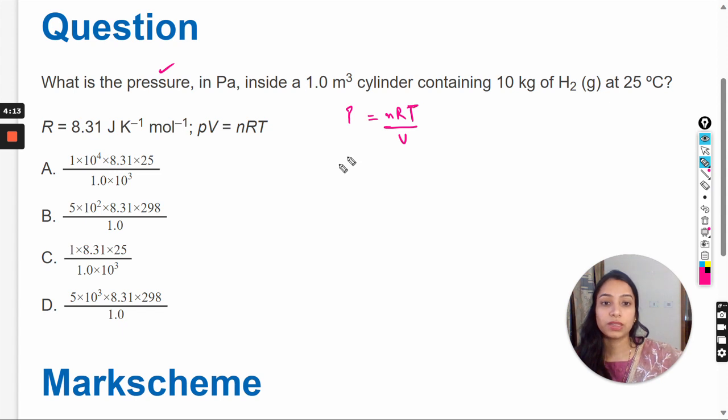So this is the formula, and now we will put the values here in the formula. n is the number of moles, so we have to calculate the number of moles for hydrogen gas. n equals given mass upon molar mass.